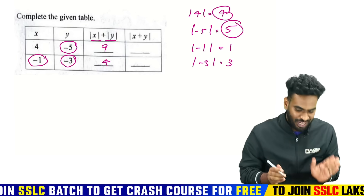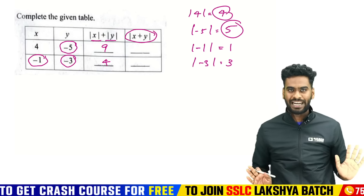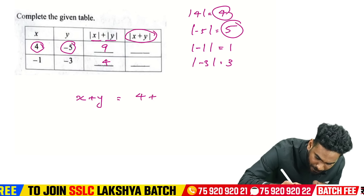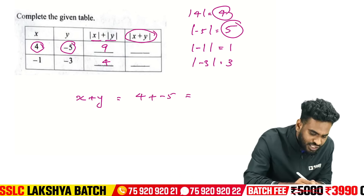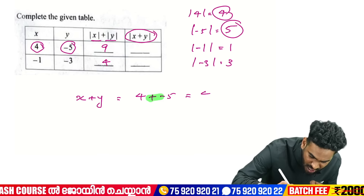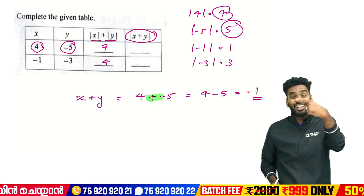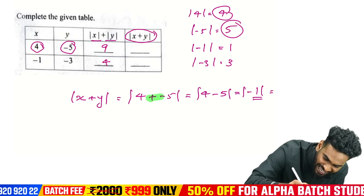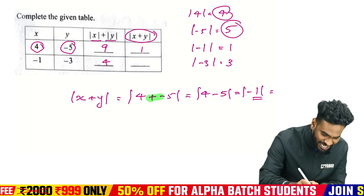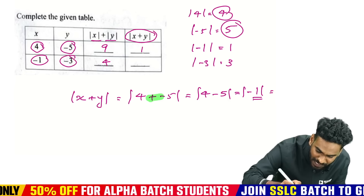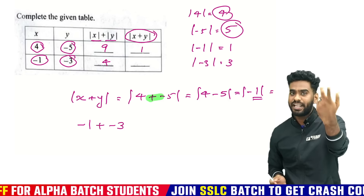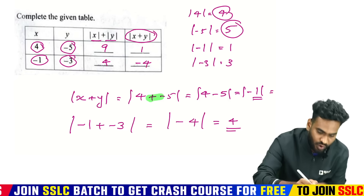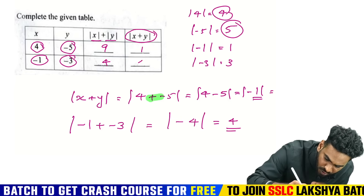Now for mod of X plus Y: for the first example, X plus Y equals 4 plus minus 5 equals minus 1. Modulus of minus 1 equals 1, so the answer is 1. For the second example, X plus Y equals minus 1 plus minus 3 equals minus 4. Modulus of minus 4 equals 4.